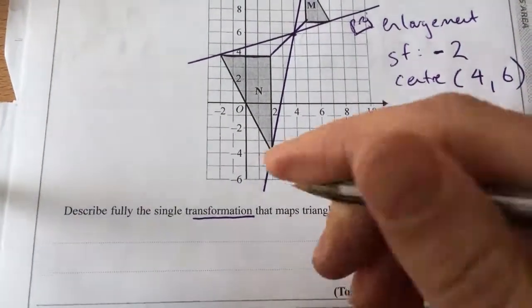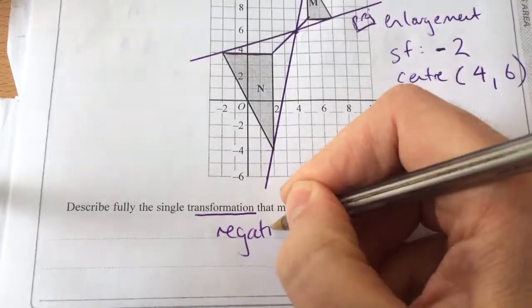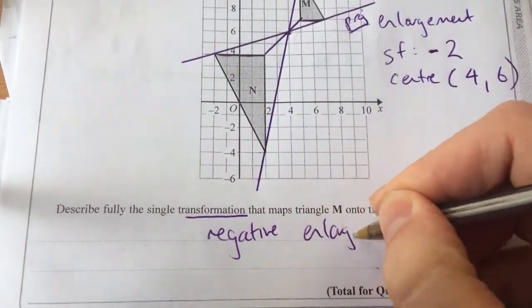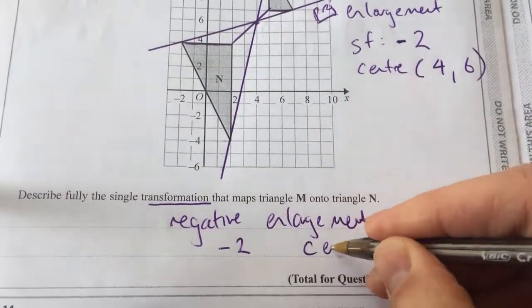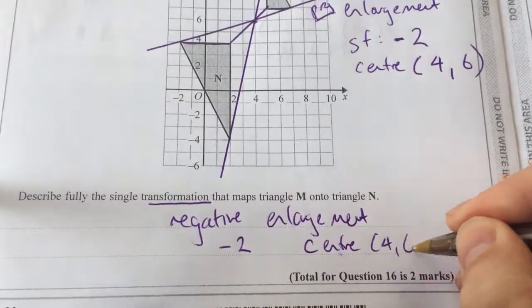So it's a negative enlargement of scale factor minus 2, and the center is 4 and 6.